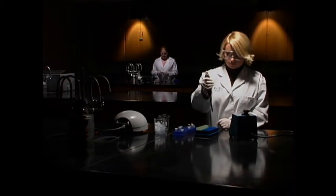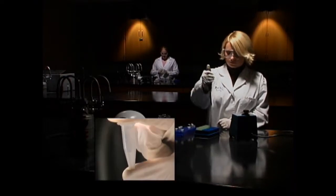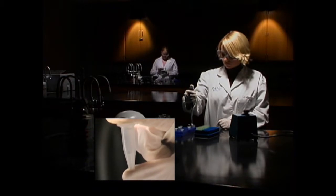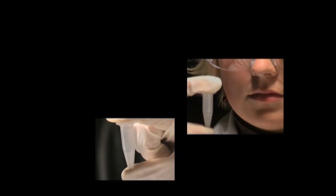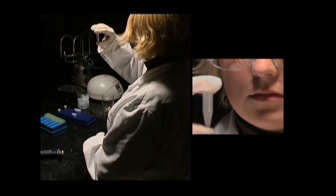Cap the tube again and mix it thoroughly. You should see a white precipitate form. This precipitate is made up of SDS, cell membrane fragments, proteins, and large amounts of chromosomal DNA, which is attached to the membrane fragments.